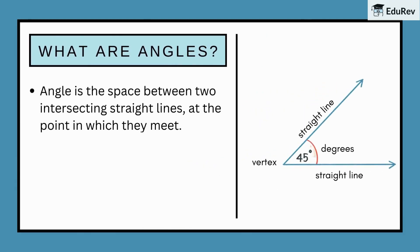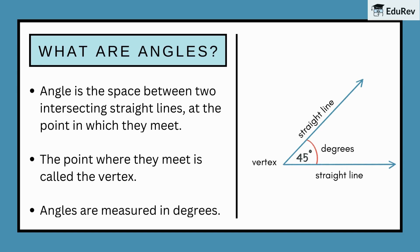Angle is the space between two intersecting straight lines at the point in which they meet. The point where they meet is called the vertex. Angles are measured in degrees.